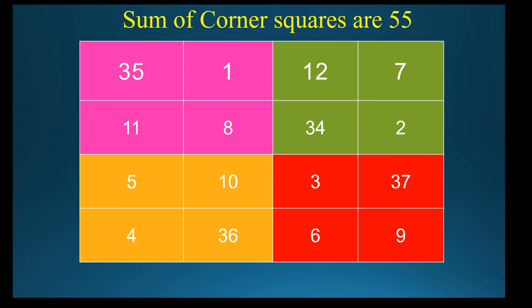Next, take green colored box: 12, 7, 2, 34. What total? 55.